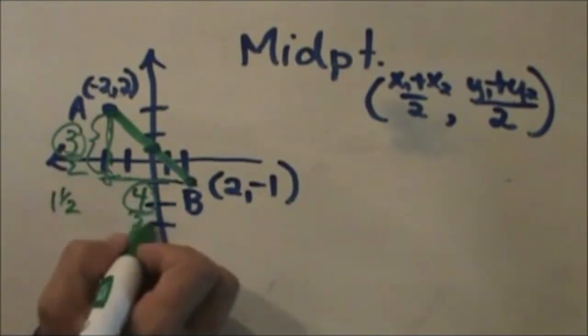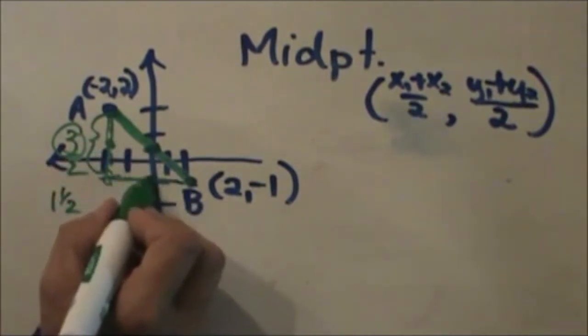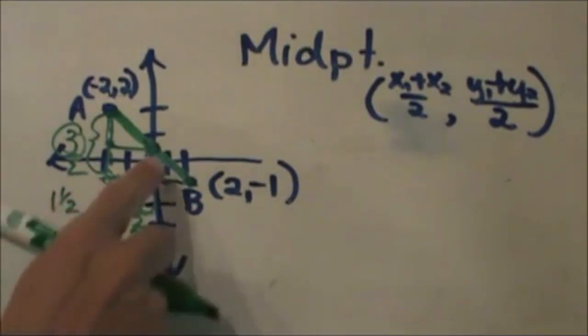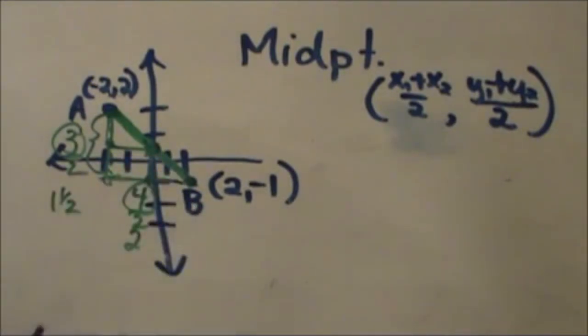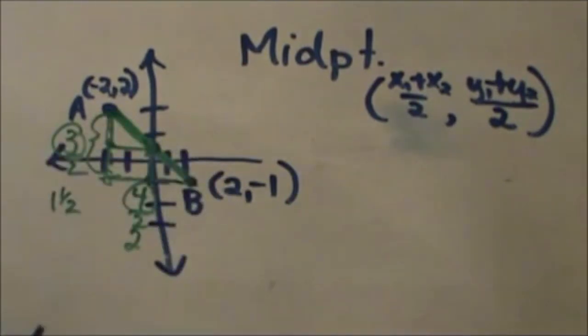So I take half of each side and I go one and a half here and two here, and then I see where those two meet and that gives me my midpoint. There you go. So I have created like a little rectangle inside of this right triangle. That is the graphical way if you like graphs.